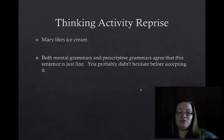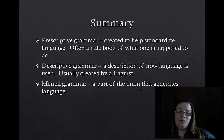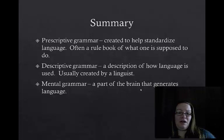In summary, we talked about three types of grammar. A prescriptive grammar is often created to help standardize language and serves as a rule book for what a person is supposed to do. A descriptive grammar is a description of how language is actually used, usually created by a linguist. A mental grammar is not something we'll ever see, but it's the part of our brain that generates language and makes grammaticality judgments about whether something is correct or not.